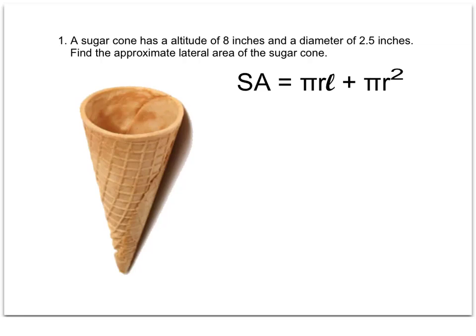In this video, Practice Problem 2, we're told a sugar cone has an altitude of 8 inches and a diameter of 2.5 inches, and we're asked to find the approximate lateral area of the sugar cone.